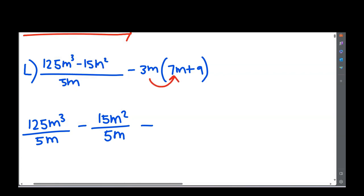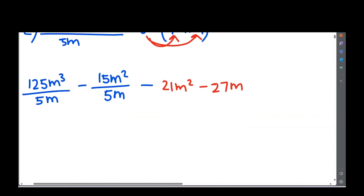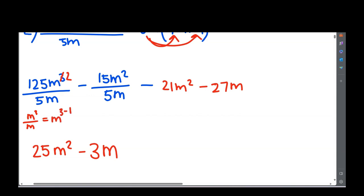Now sort out the fractions. 125 divided by 5 gives us 25, and m³ divided by m gives us m². Then 15 divided by 5 is 3, and m² divided by m leaves us with m. For these, you use your exponent laws — when you do the division, m³ divided by m means m to the power of 3 minus 1, giving m². Same here: m² divided by m means m squared minus 1, giving m.